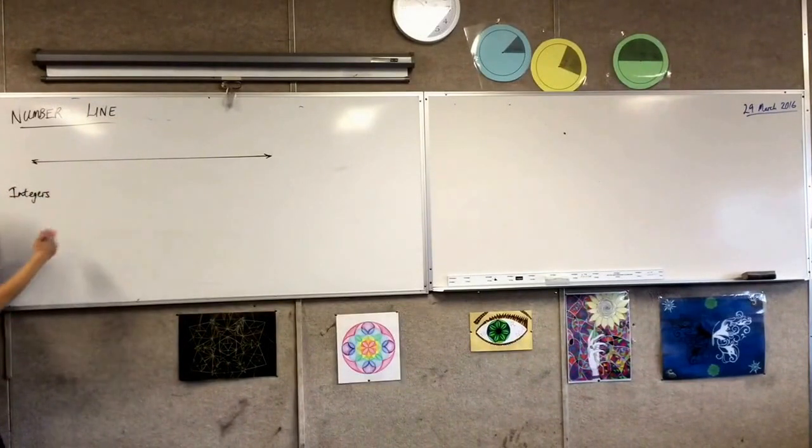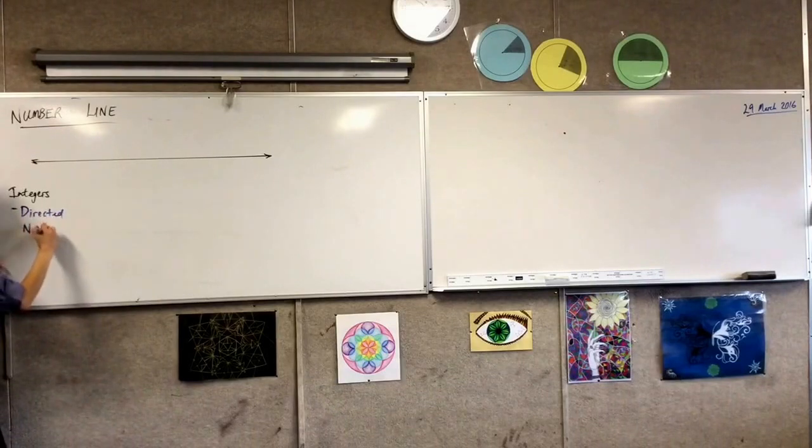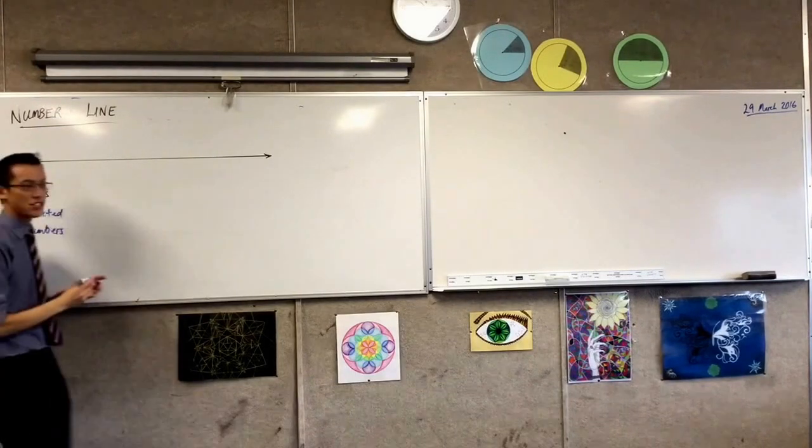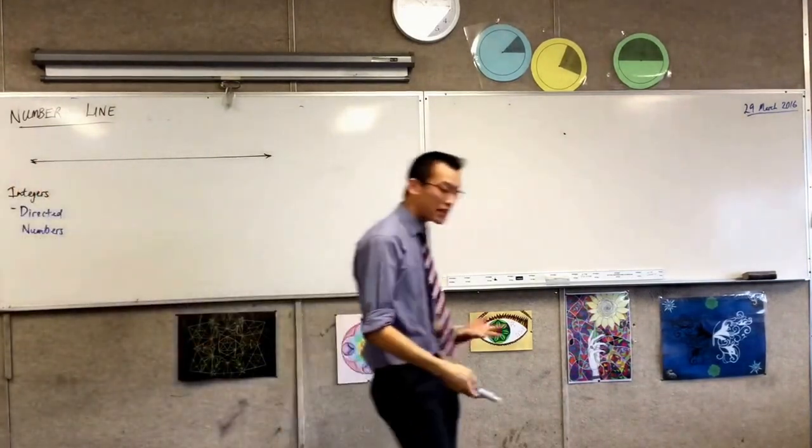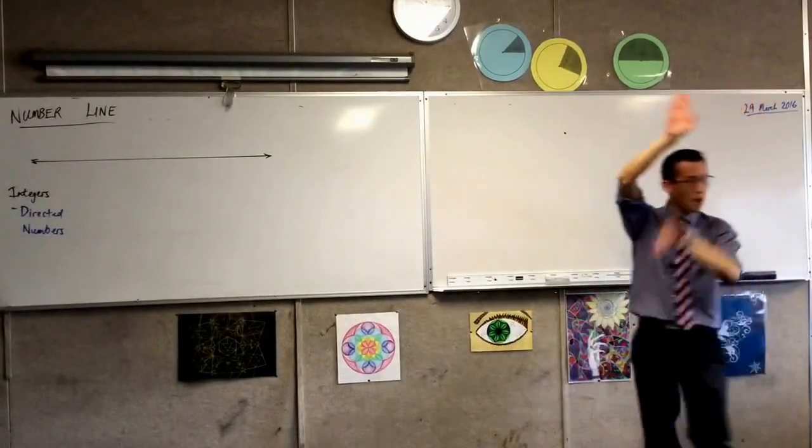These are, another name for these is directed numbers. So in some textbooks, and sometimes you'll hear a teacher say, let's say that directed number. What they mean is a number like an integer, which can go one way or in the opposite direction.